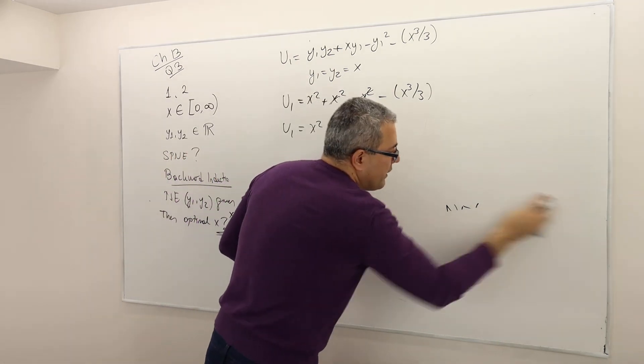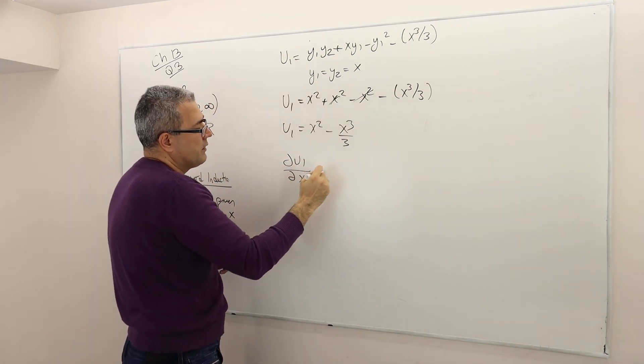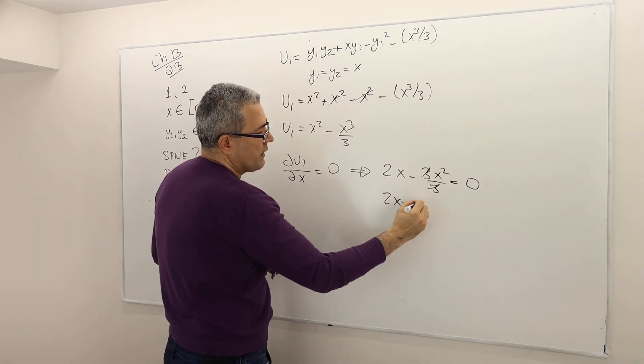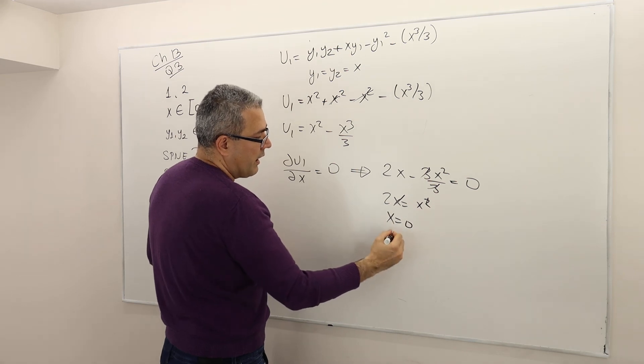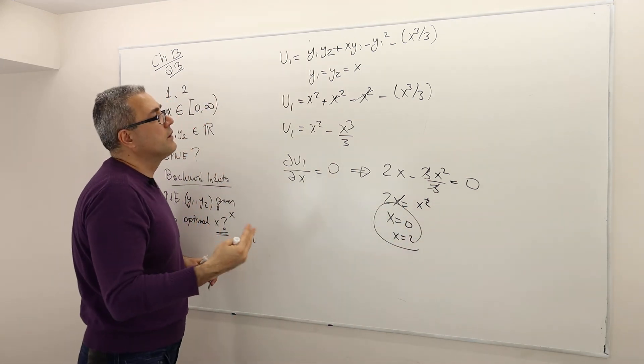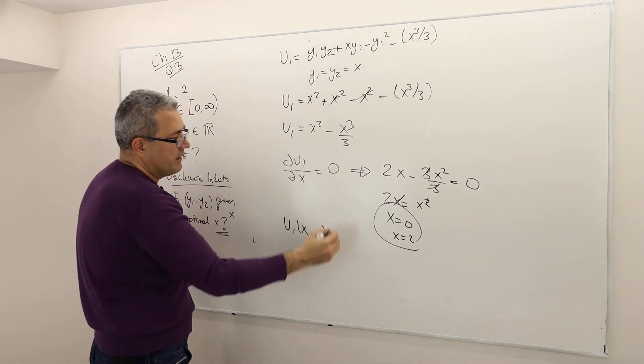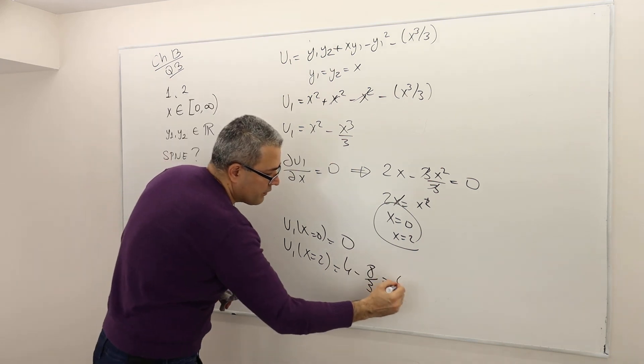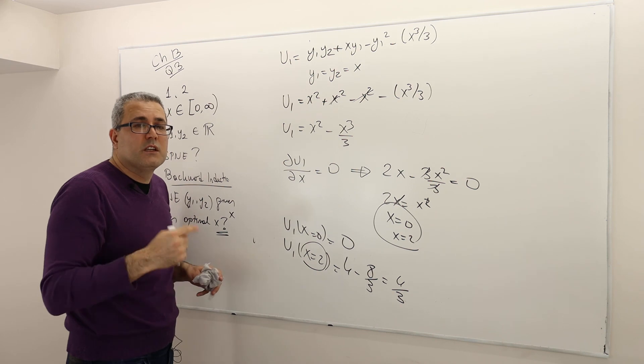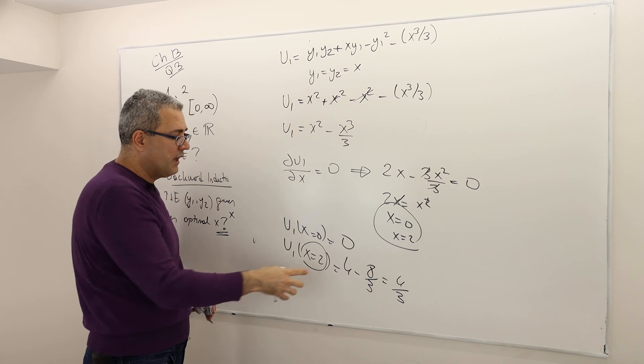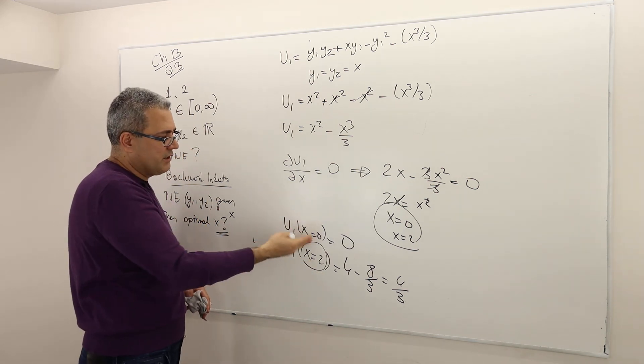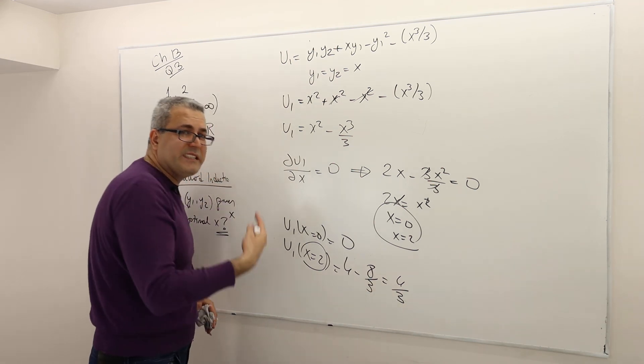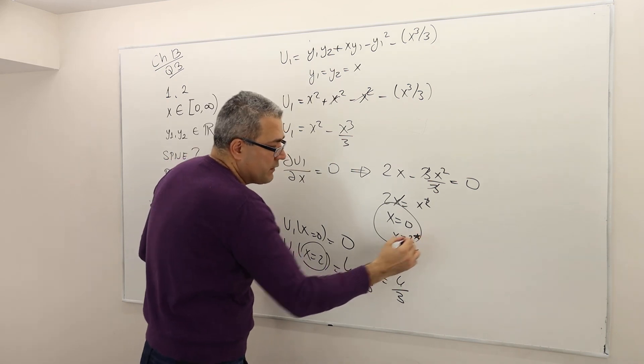So what X maximizes this? Solve the first order condition. ∂u1/∂x = 0. If you take the derivative, it's 2x - 3x²/3 = 0. So that means 2x = x², either x = 0 or x = 2. So there are two critical points. Which one really maximizes this? u1(x=0) is going to take the value 0. u1(x=2) is going to take the value 4 - 8/3, which is 4/3. Clearly, x = 2 is the global maximum. Remember, this is a first order condition to find the critical points. You don't really have to look at the second order conditions. Just calculate the function's value when x is 0 and x is 2. So you see that x = 2 is going to deliver a higher value. So therefore, x = 2 is going to be the optimal.